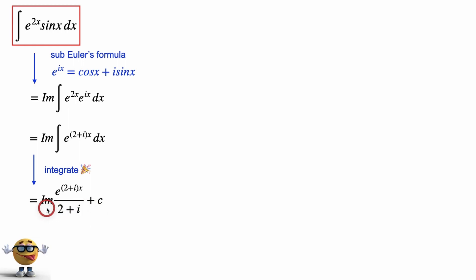Now what we need to do is find out what this imaginary part is. So to do that, we're going to substitute back into Euler's formula to give us this. So e to the ix is this right here. And we need to extract the imaginary part.